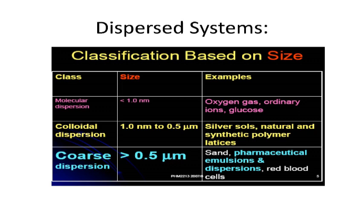Next is liquid-in-solid, where dispersion phase is liquid and dispersion media is solid - that is called gel. Examples are gelatin and cheese. Then liquid-liquid, called emulsions - examples are milk emulsions and cod liver oil with multiple compounds. Then liquid-gas, called liquid aerosol - examples are mist, fog, and cloud. Then gas-in-solid - that is called solid foam - examples are foam rubber and pumice stone. Then gas-in-liquid, that is called foam.